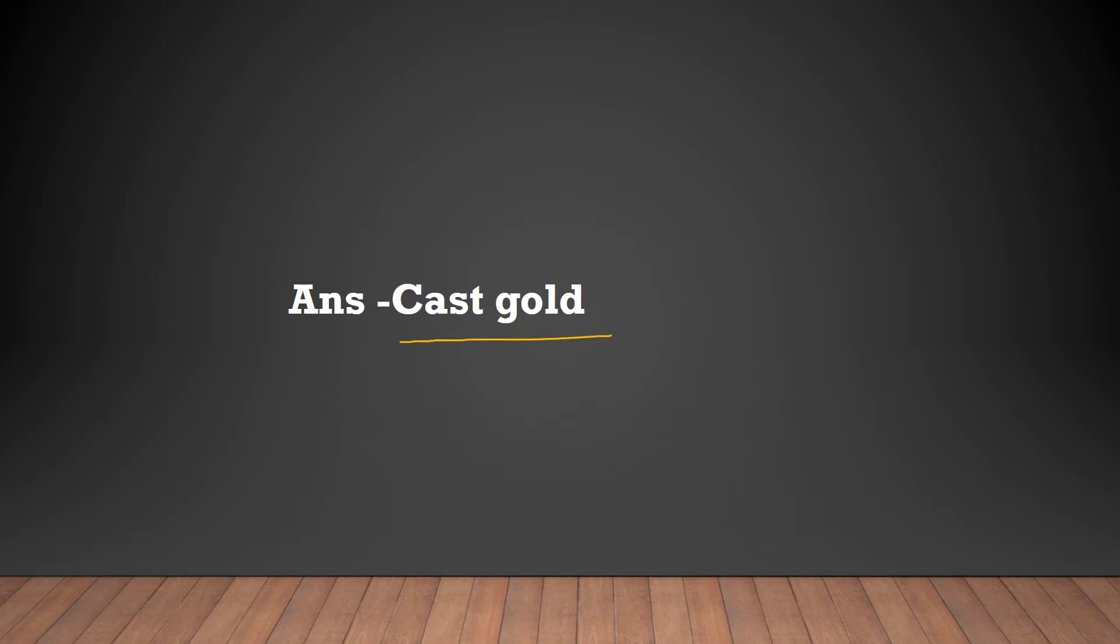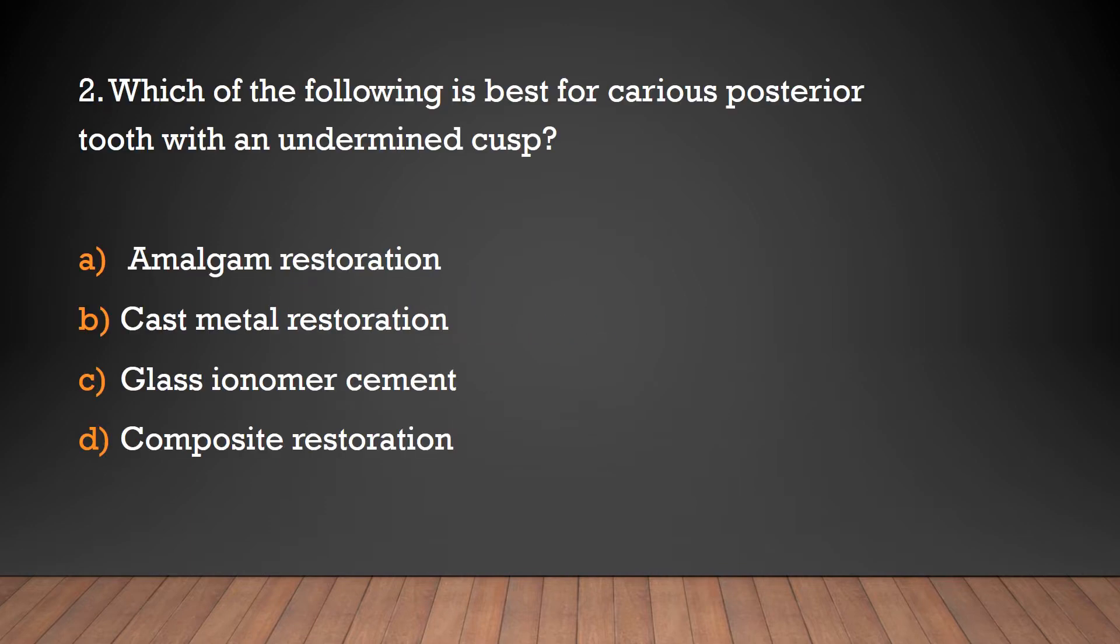Cast gold. Which of the following is best for carious posterior tooth with an undermined cusp: amalgam restoration, cast metal restoration, glass ionomer cement, composite restoration? Cast metal restoration.